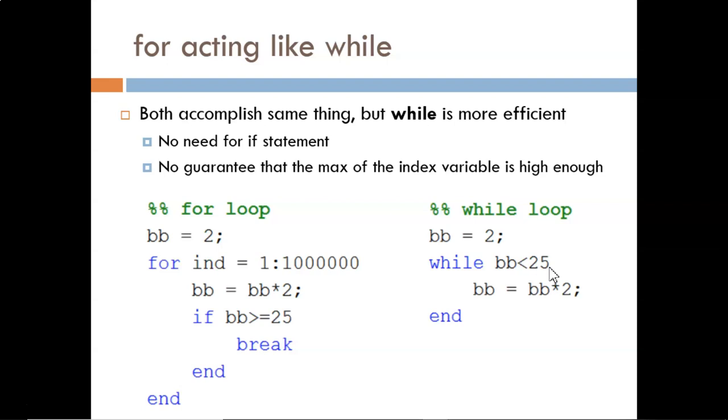In this case, BB will take on the values 2, 4, 8, 16, 32, and then stop there. In the for loop, we see a clunky attempt to replicate this process. First, I have this index variable arbitrarily run through a large range of values.